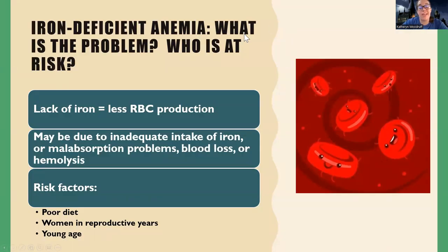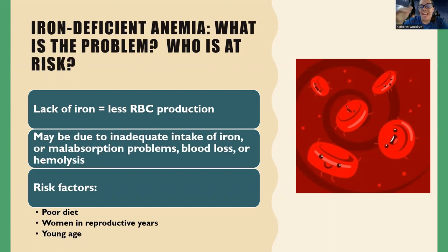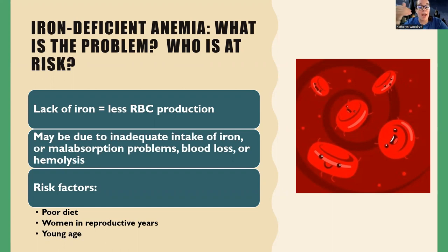Now we're going to start going into the individual types of anemia. First we have iron deficient anemia. For this type, the problem is I don't have an ingredient I need to make red blood cells — and the ingredient I'm missing is iron. Iron is a crucial ingredient to make red blood cells, so if I don't have enough iron, I'm not going to be making as many. I don't have the supplies.